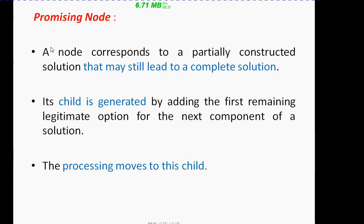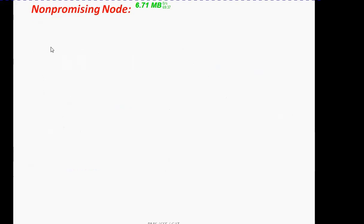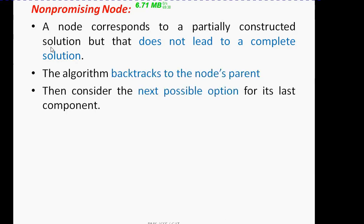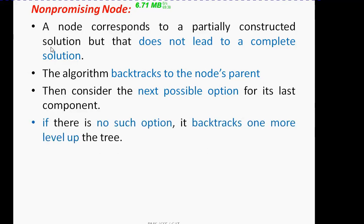The other type of node is the non-promising node. This node also corresponds to a partially constructed solution, but it does not lead to the complete solution. If we find such a non-promising node, instead of moving towards the leaves, we need to backtrack to its parent. After backtracking to the parent, we need to add the next option. If we get another option we continue; otherwise, if there is no such option, we need to backtrack one more level up.